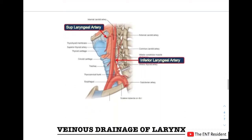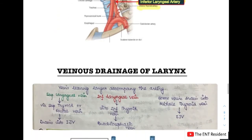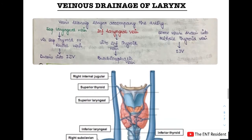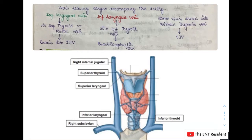In the picture, the arterial supply shows the inferior laryngeal artery arising from the inferior thyroid artery, and the superior laryngeal artery arising from the superior thyroid artery. The superior thyroid artery also gives the cricothyroid artery. Now for the venous drainage of the larynx — the veins have drainage similar to the arteries.